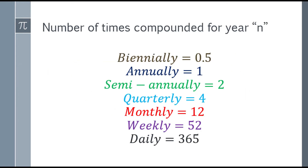What is the number of times compounded per year, or the variable N, or the compounding frequency? For biennally, or every 2 years, that will be 0.5. Annually, that will be 1. Semi-annually will be 2. Quarterly, that will be 4. Monthly is 12. Weekly is 52. And lastly, daily, that will be 365.